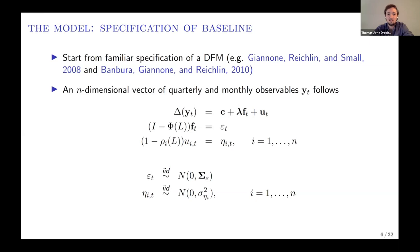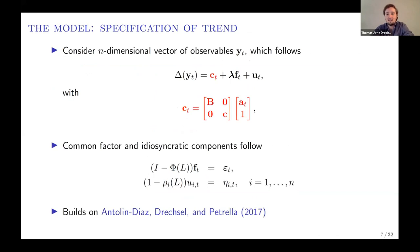In the standard basic version, these series have a constant mean in growth rates, and the factor and idiosyncratic components have constant volatilities. The first thing we introduce is that we allow the mean growth rate of some series to follow a time-varying process. We allow this for a subset of series—some can have a constant mean, others a time-varying mean—and we also allow a common mean to be shared between a subset of variables, for example between output and consumption.